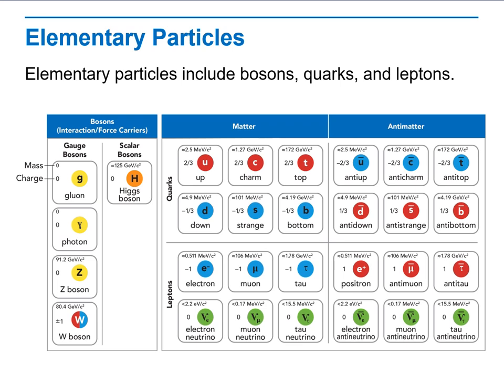Now, elementary particles are bosons, quarks, and leptons. These are the building blocks of all matters as far as we all know. The electron is an example of an elementary particle because electrons are not made of anything else.